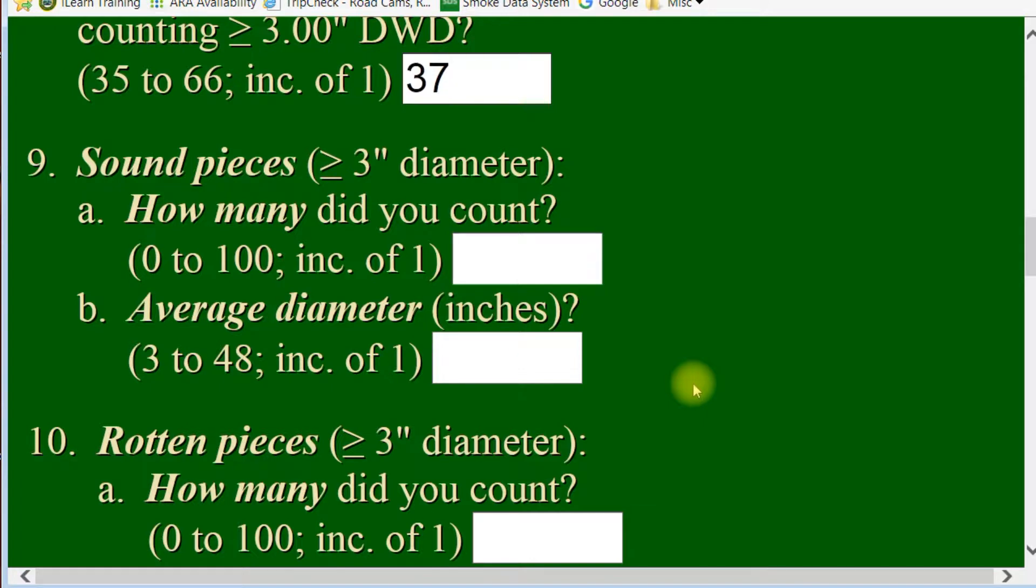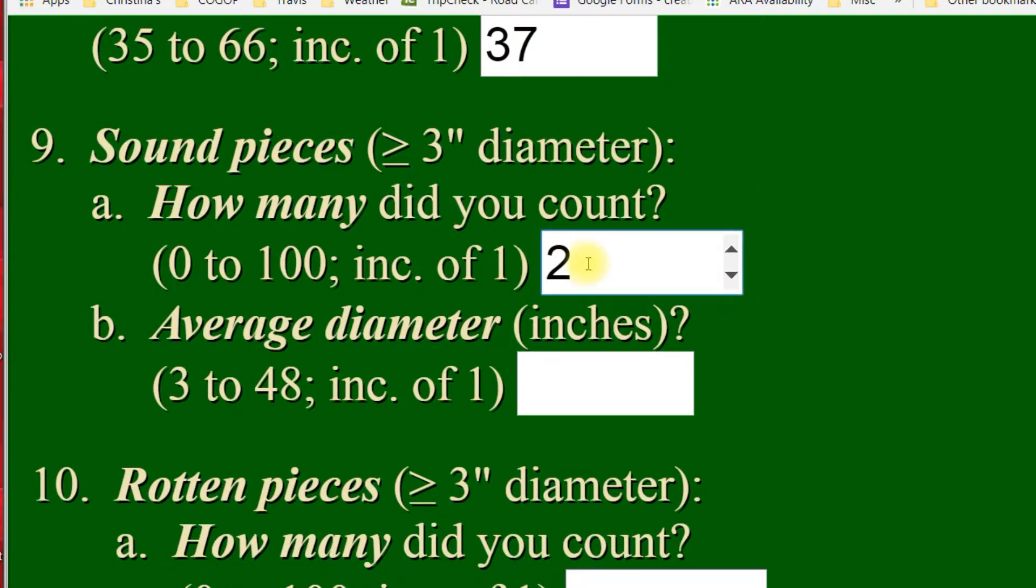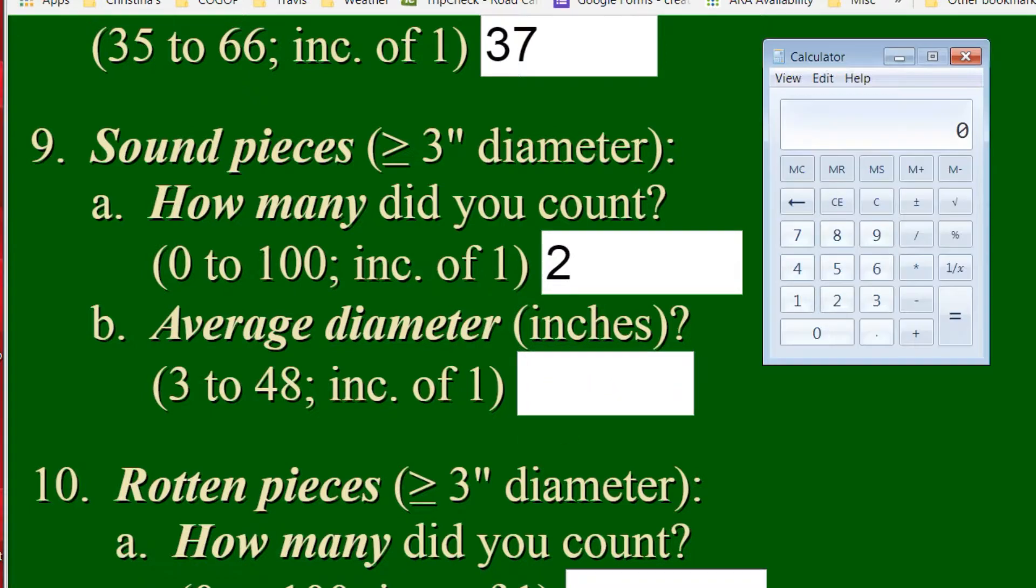On your greater than three inch pieces, they're going to ask for sound and rotten pieces. How many did you count and what was the average diameter? The first part of question 9a is how many pieces did you count? Let's say we counted two and I just simply put the two in there. Then the next question they ask you is what is the average diameter of those logs? What you're supposed to do in this is you're supposed to get the square root of each log diameter. So, let's say you have a log that's four inches in diameter. You simply click your four, you find your little square root key on your calculator. Boom! The square root of four is two.